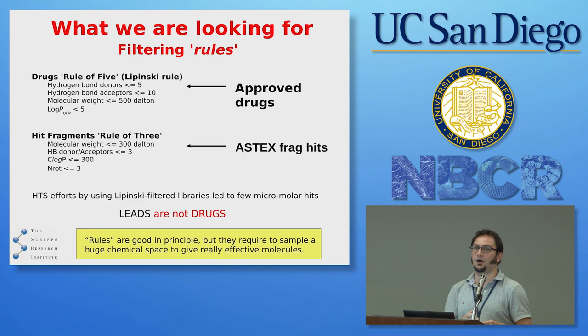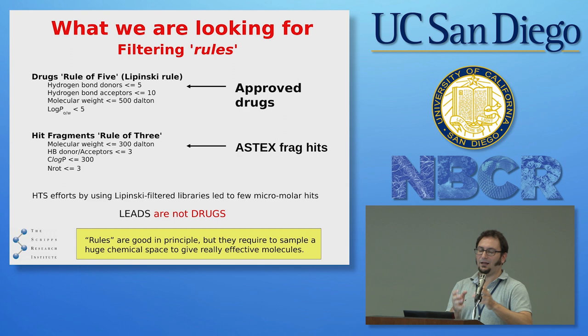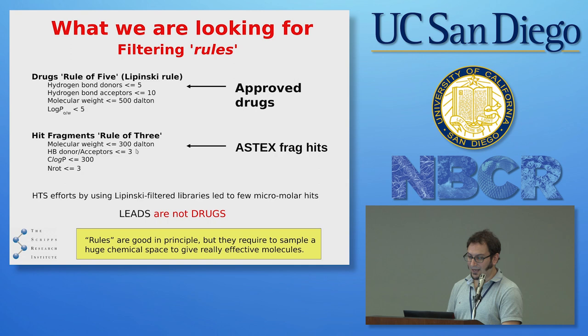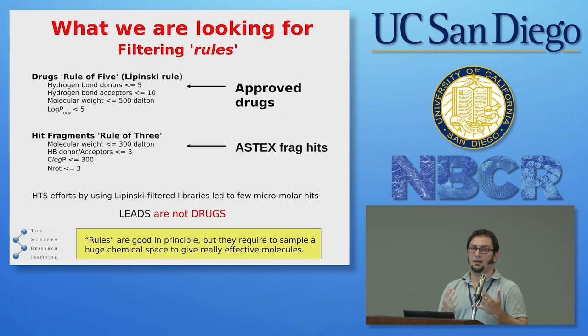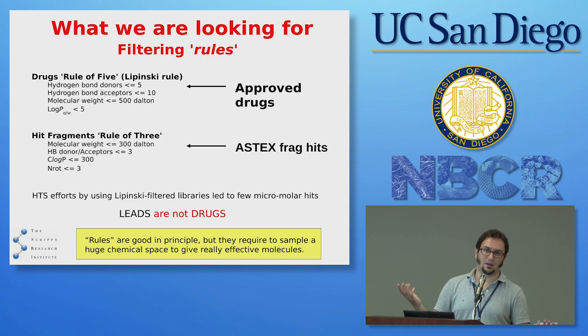Another approach to virtual screening is to look for fragments instead of large molecules. In fragment screening, instead of docking big molecules you screen a library of smaller fragments. A company called Astex analyzed similar guidelines applied to fragments — called the Rule of Three, because again all multiples of three. The advantage of using fragments over full-blown molecules is that you can cover more chemical space with smaller fragments than you would with bigger molecules.